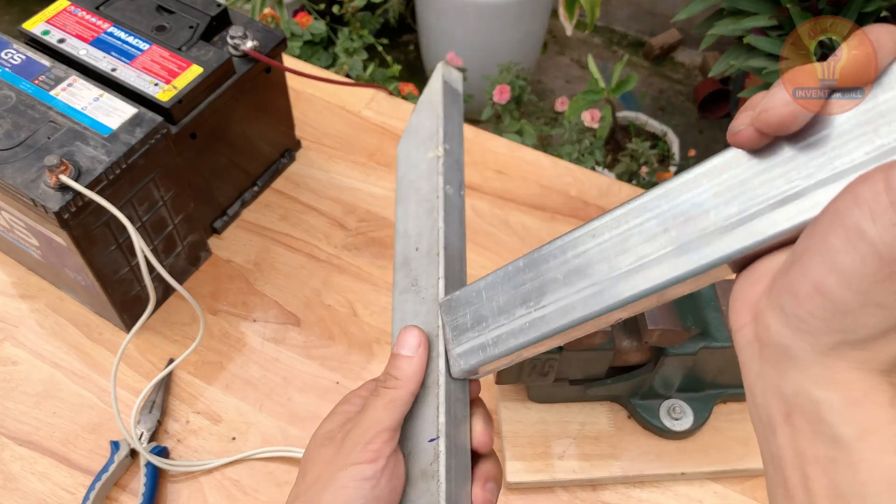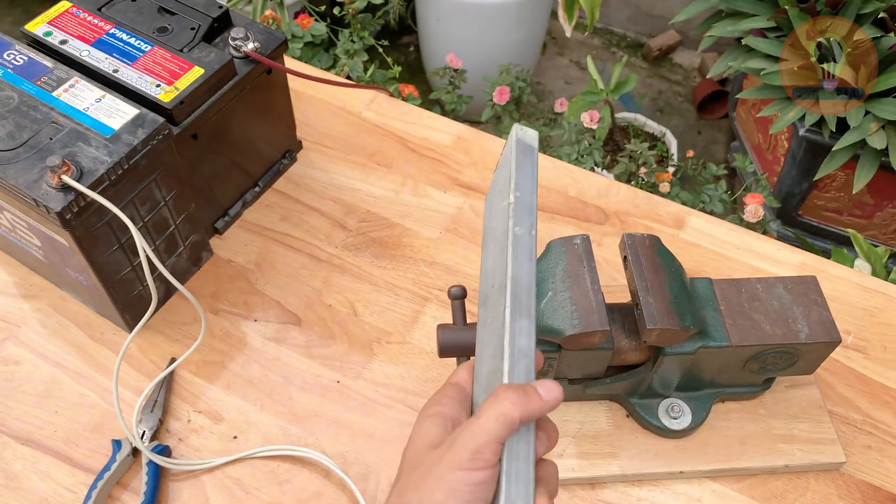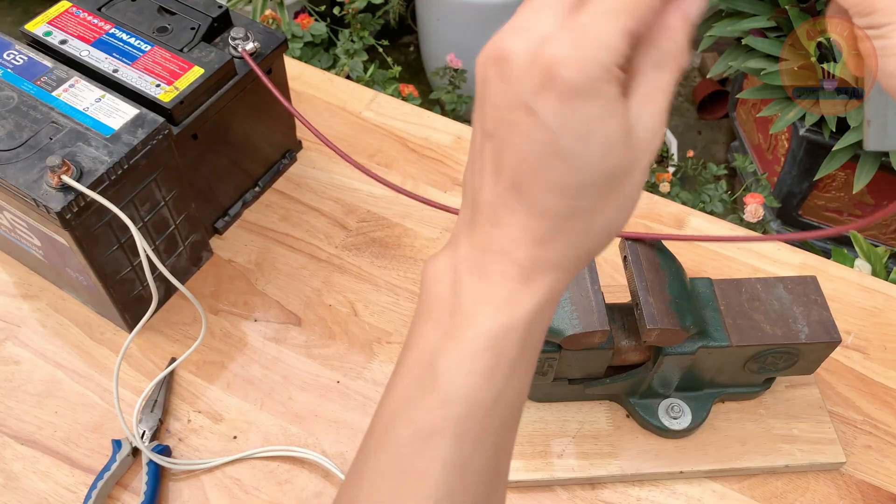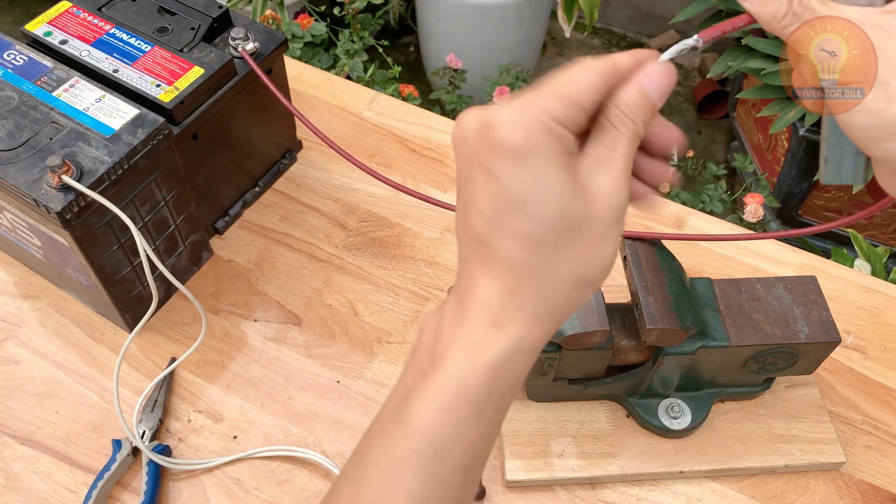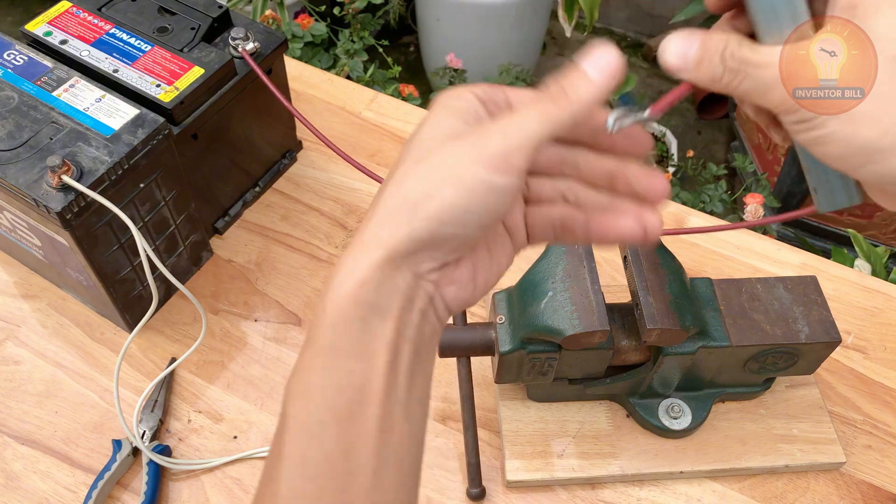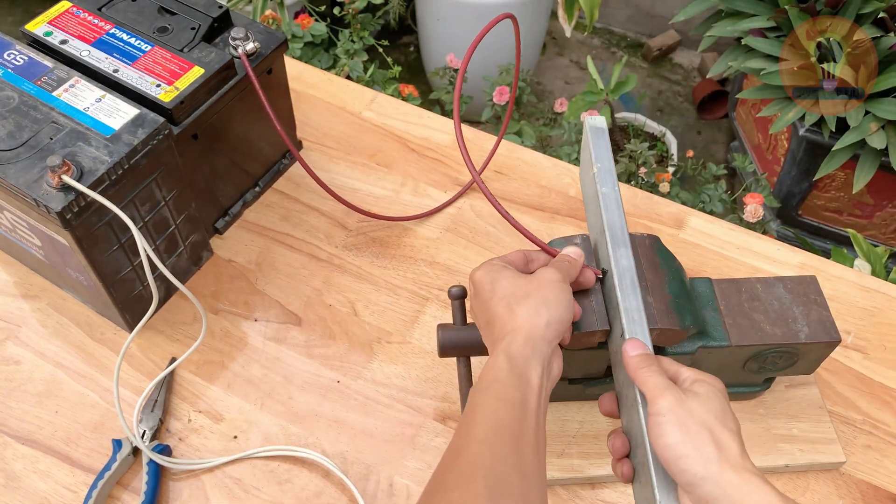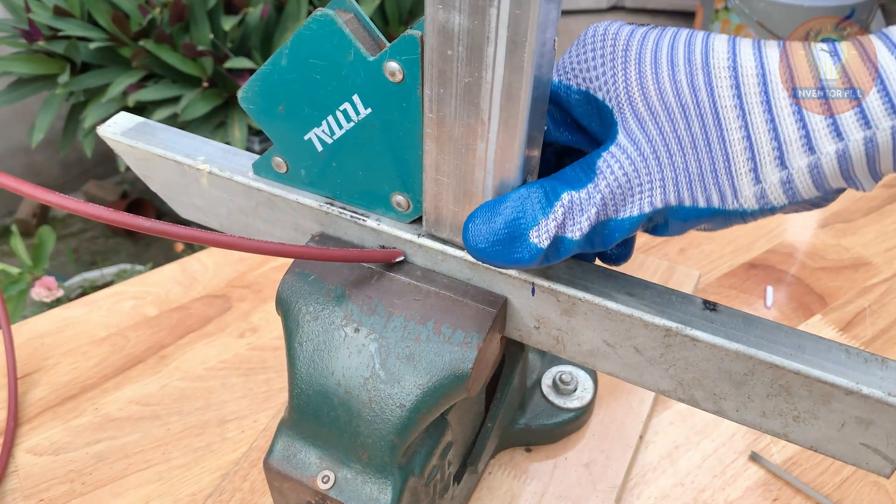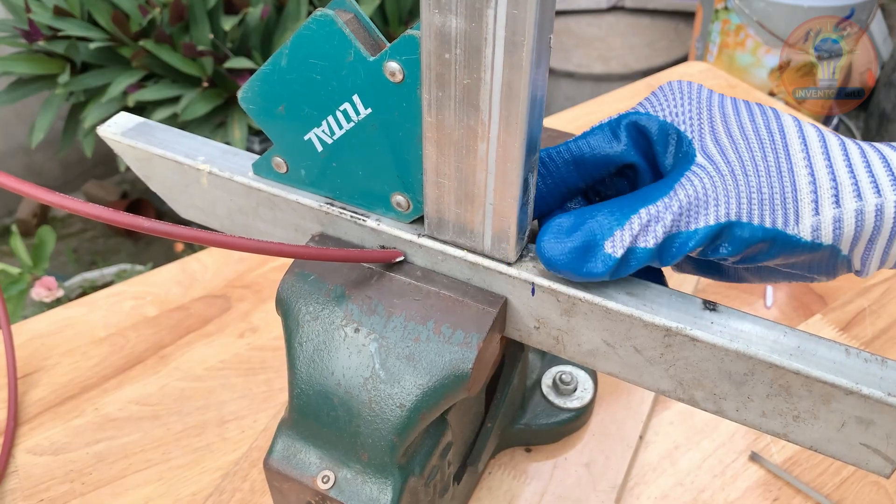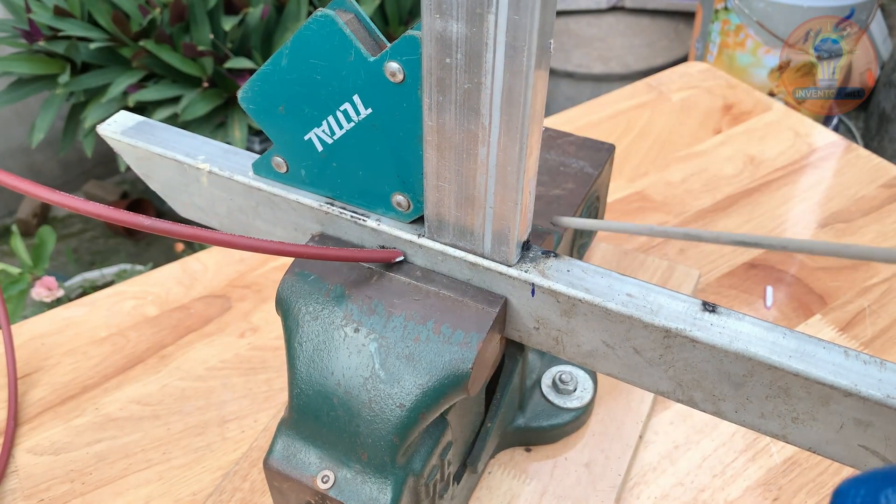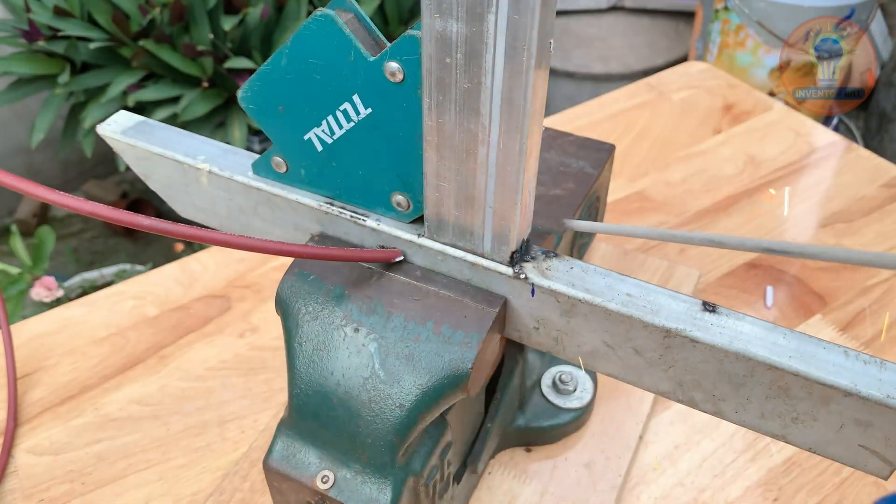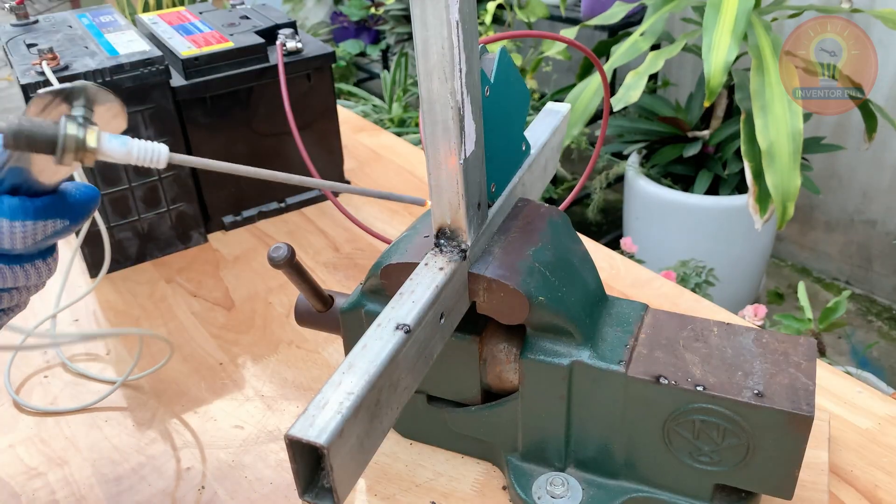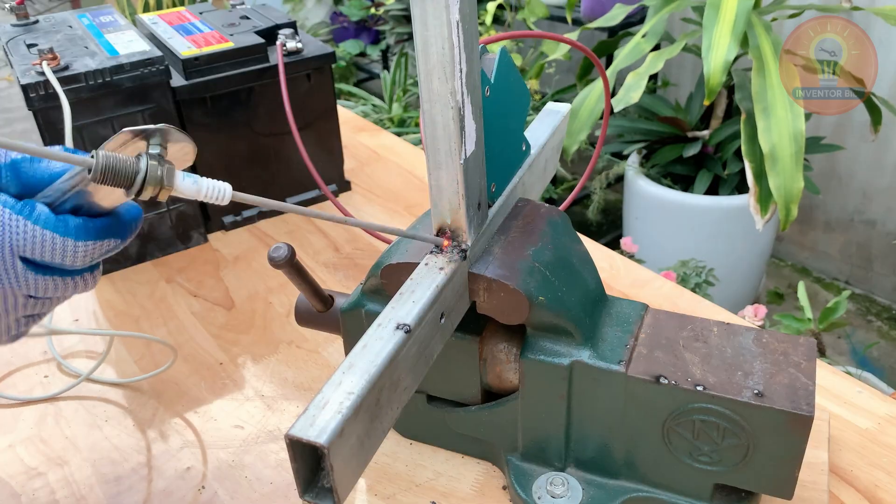Now grab two small aluminum bars or scrap metal pieces for the test. Clip the orange wire to one piece and hold your spark plug handle with the welding rod touching the other. The moment the rod makes contact, you'll see a bright spark. That's your arc forming. Move the rod slowly along the joint and watch the metal melt and fuse together. The plug's ceramic insulator keeps your hands safe from heat, and the connection stays solid thanks to the metal shell. In just a few seconds, you'll have a clean, strong weld made completely with a recycled spark plug and two small batteries. Simple, clever, and surprisingly effective.